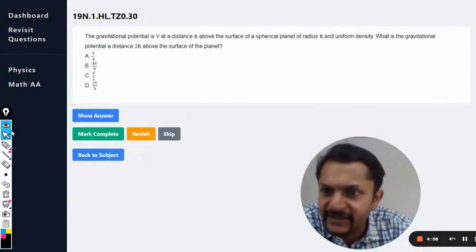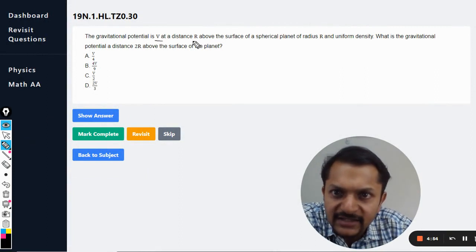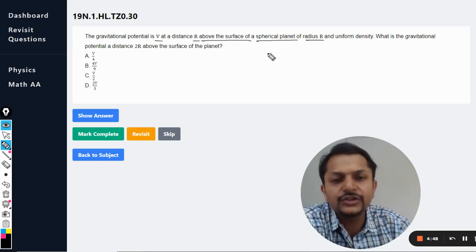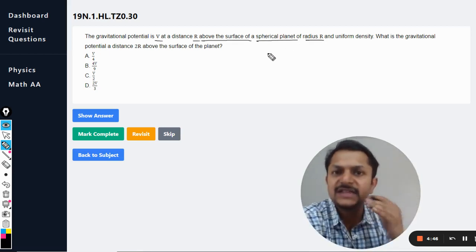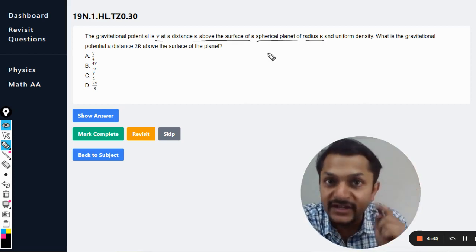Okay, dear students, let's see what is in this question. The gravitational potential is V at a distance r above the surface of a spherical planet of radius R. So the total distance between the center of the earth and that point will be taken as 2R. What is the gravitational potential at a distance 2r above the surface of the planet?